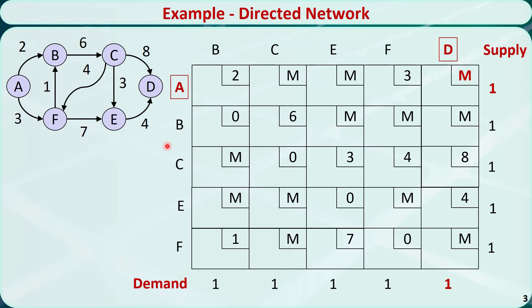Because this is a directed network, there is no arc from C to B, so the cost is M. From one node to itself, the cost is 0. For example, from C to C, the cost is 0.